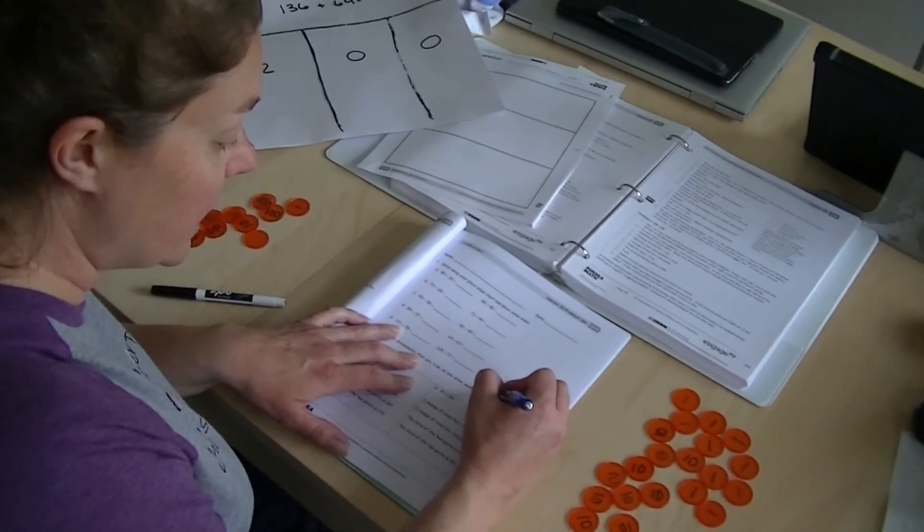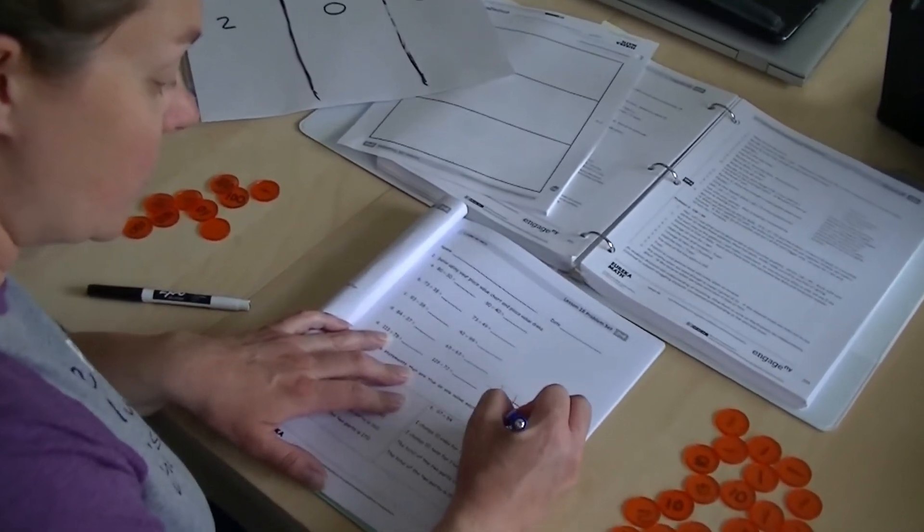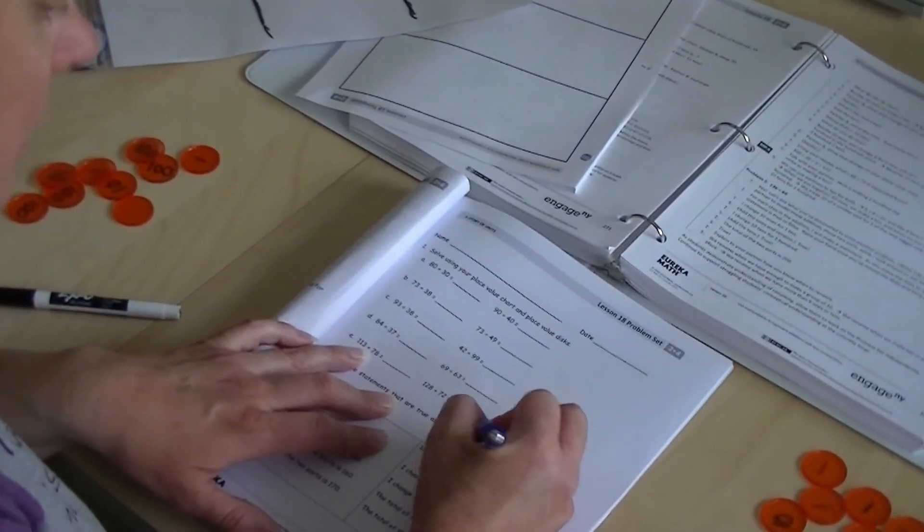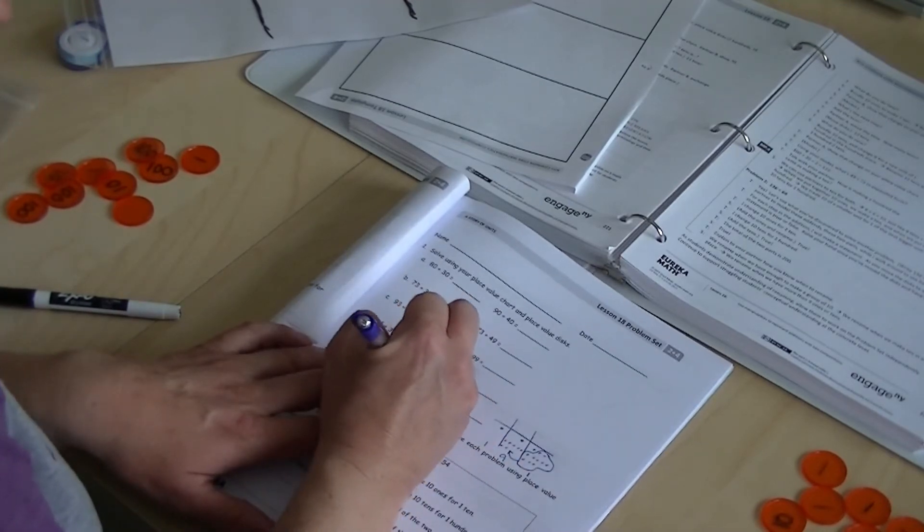So this bundle becomes a 10. Now you have 7, 8, 9, 10 tens, 1, 1, and 100. So this would be 191.